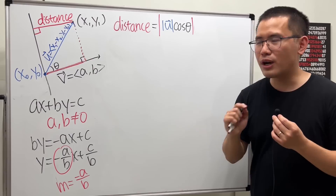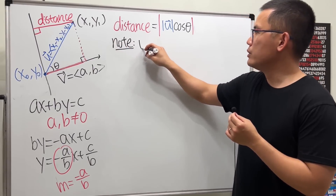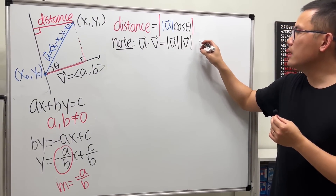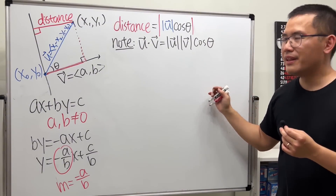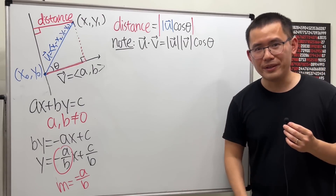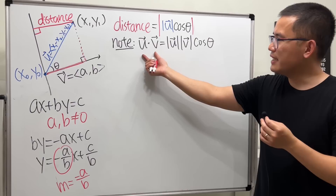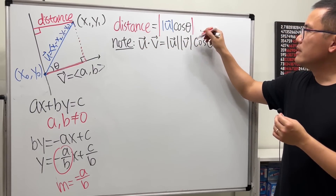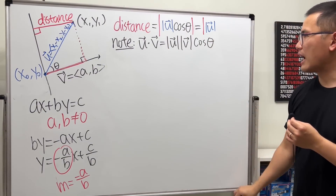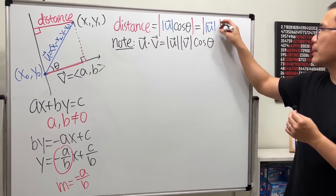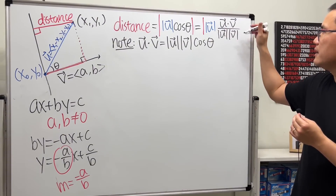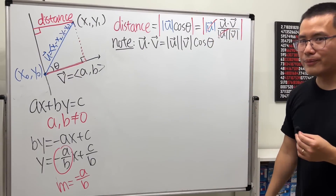To find the angle θ, we use the dot product identity: u · v = |u| · |v| · cos θ, which follows from the law of cosines. Solving for the distance, we get: distance = |u| · cos θ = |u · v| / (|u| · |v|) · |u|. The magnitude of u cancels, leaving: distance = |u · v| / |v|.